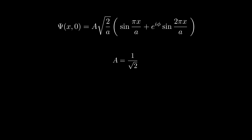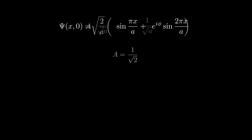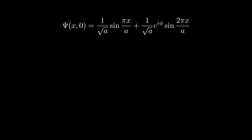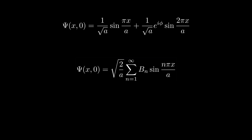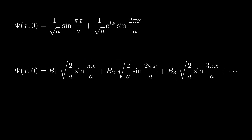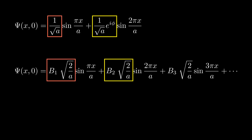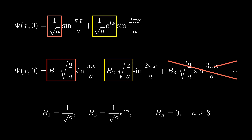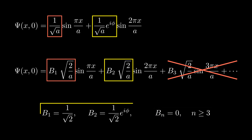Now that we've determined the normalization constant, we substitute it back into our initial wave function. Recalling the general form of a wave function in an infinite square well and comparing our specific wave function to this general form, we can identify the coefficients B_n. We find that for n ≥ 3, B_n is simply 0, so our wave function is only made up of the first two states, confirming that higher energy levels do not contribute.